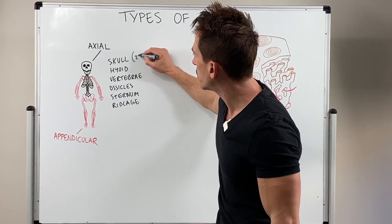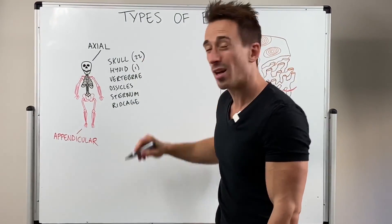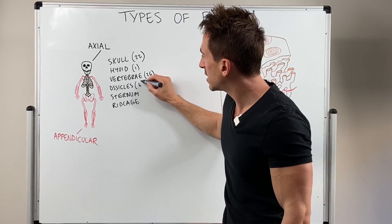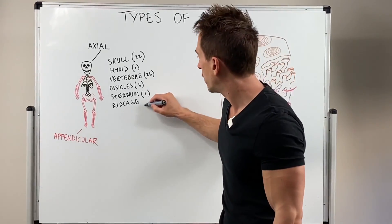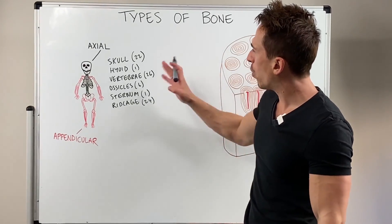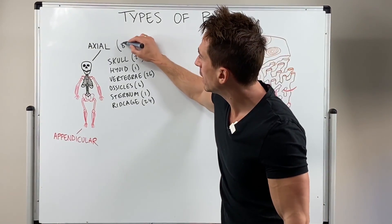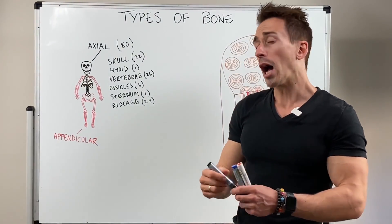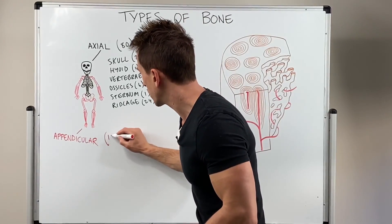How many bones are associated with each? The skull has 22 bones, the hyoid has 1, the vertebrae 26, the ossicles 6, the sternum 1, and the rib cage 24 bones. If you add them up, you get 80 bones of the axial skeleton, which leaves us 126 bones for the appendicular skeleton.